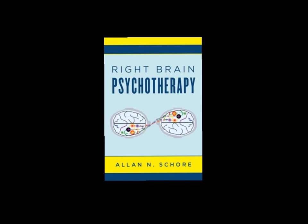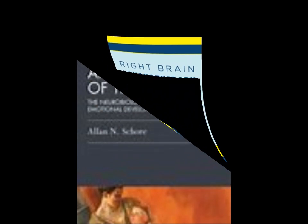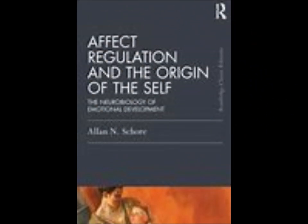Then there is Daniel Stern, who emphasized an innate will to independence, and proposed layers to development, with a self-regulating other, where the attunements or purposeful misattunements contribute greatly to the development of personality in an infant. His work was in contrast to Mahler, where he found no evidence of an autistic or symbiotic phase.